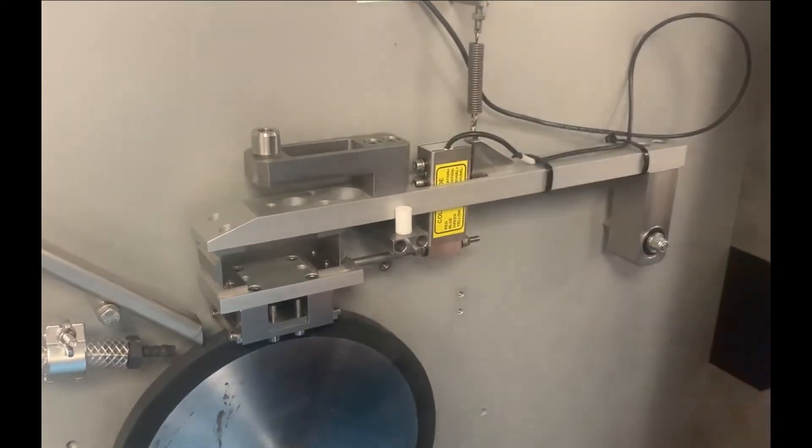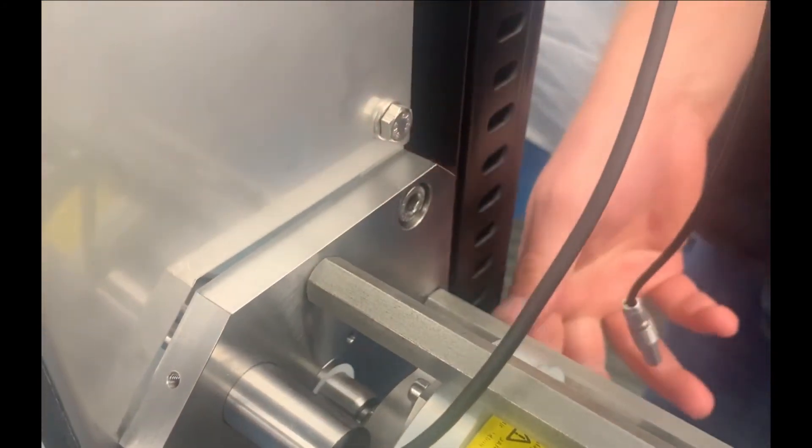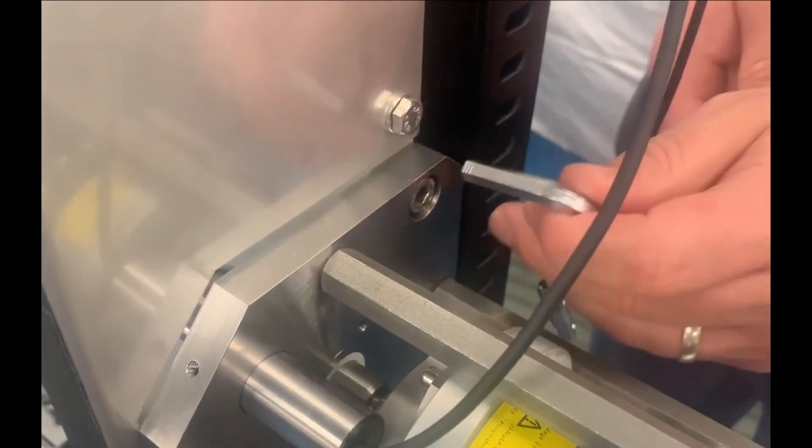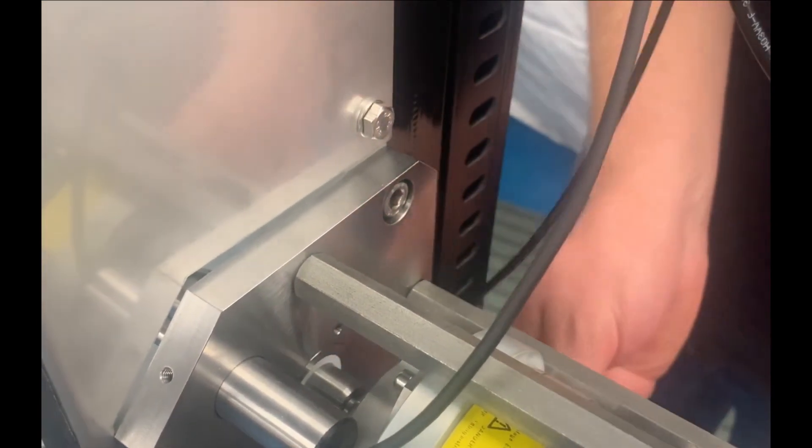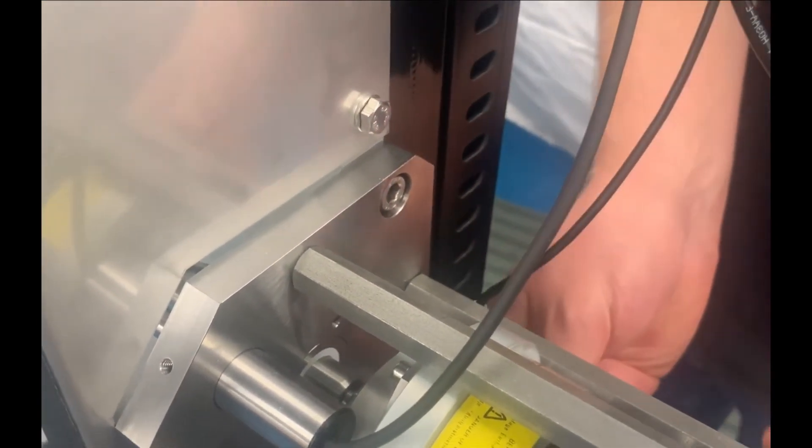To reposition the pneumatic load bellows, first disconnect the force transducer cable. Next, support the assembly and remove the cap head screws.